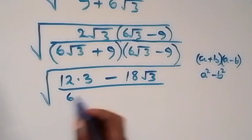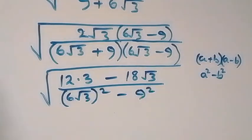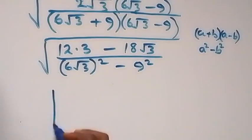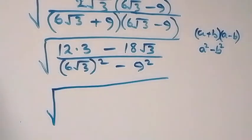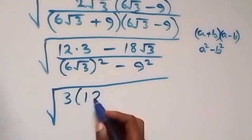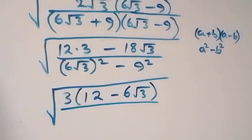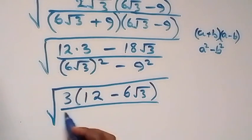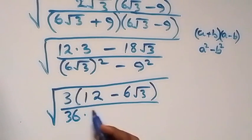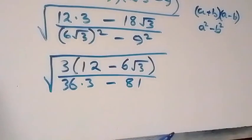So we write the denominator as (6√3)² minus 9². Simplifying further, this becomes square root of 36 times 3 minus 81, which is 108 minus 81 = 27. The numerator simplifies to 36 minus 18√3, giving square root of (36 − 18√3) / 27.